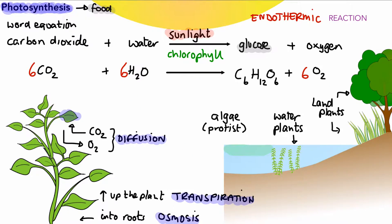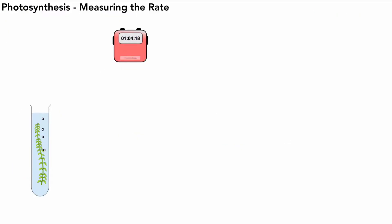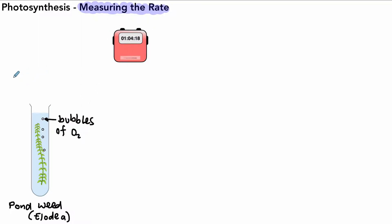That's an overview of how photosynthesis works. Now let's look at how we can actually measure the rate of photosynthesis. The easiest way is to measure the amount of oxygen produced, but that's hard to do in land plants. So we can use pondweed — a common one is Elodea — which gives off bubbles of oxygen. We might also add a chemical that provides CO₂ for the plant to use. In combination with a timer, we can measure bubbles per minute as an indication of the rate of photosynthesis.